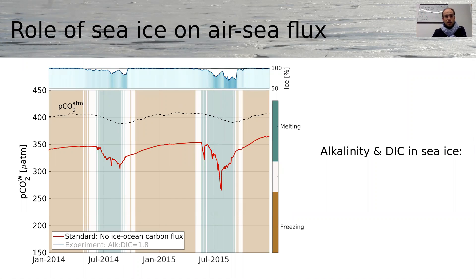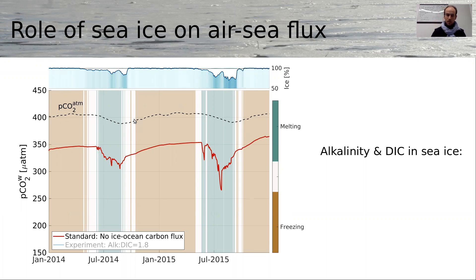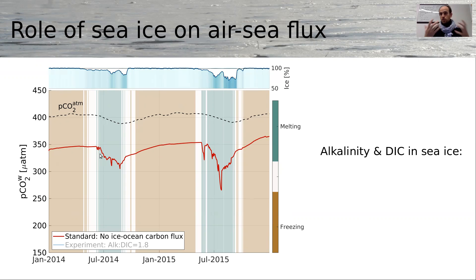What you see here is the sea ice concentration at the top, and as a background color, the freezing and melting rate — green means that the ice is melting. The dashed black line is the atmospheric pCO₂, which is a forcing. The red line is the surface water pCO₂, and that's the output of my 1D model. In this configuration, ice is pure fresh water, so this model is similar to a classic ocean model.